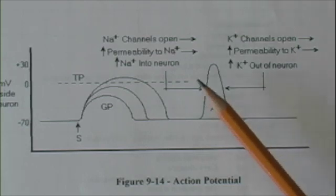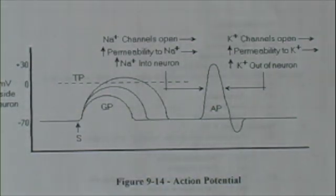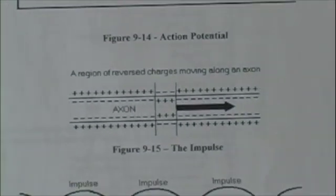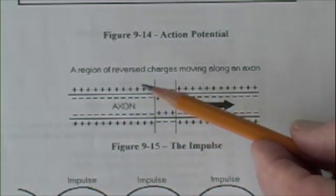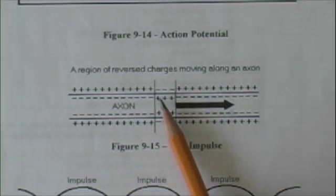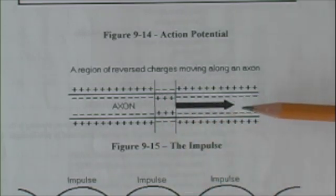Notice that the action potential is a region of reversed charges that moves down the axon. It might look like this. Here's the axon, unstimulated. The outside is positive, the inside is negative. This section is the nerve impulse, the action potential. Notice that the inside has become negative, the outside positive. And this region of reversed charges moves rapidly down the axon.